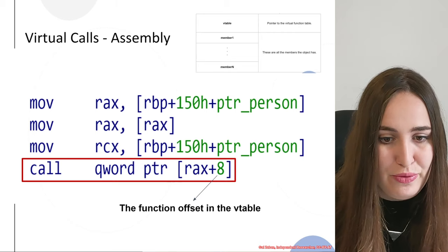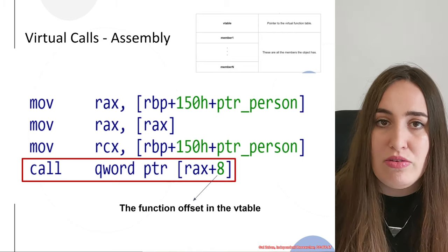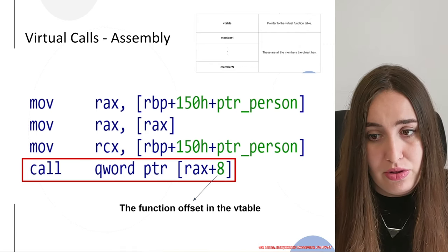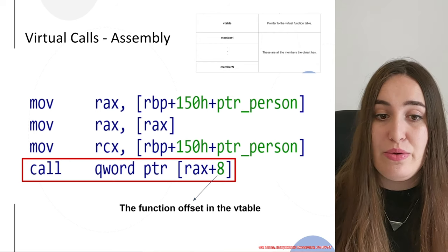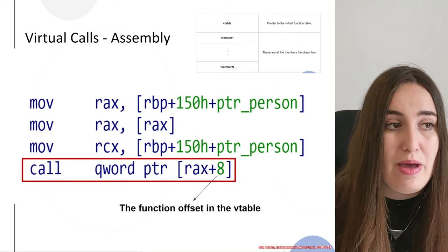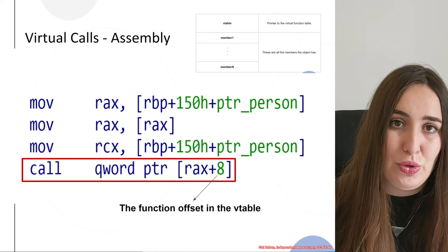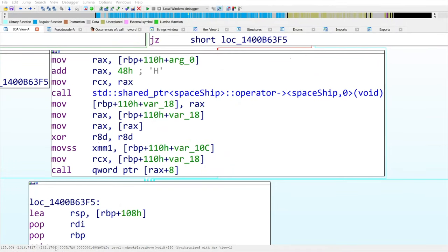We only have about four lines of assembly here, but in a lot of real binaries this is a very hard job — understanding exactly which function was called. So let's continue with virtual calls and understand how to examine more complex assembly code and a real binary with a short demo.